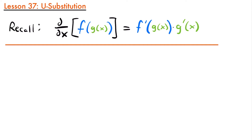Welcome back. Today we're going to be talking about u-substitution. U-substitution is a method for integration that we use when we are integrating composite functions. You can think of it as the reverse of the chain rule for derivatives, which is a rule we use when taking derivatives of composite functions.